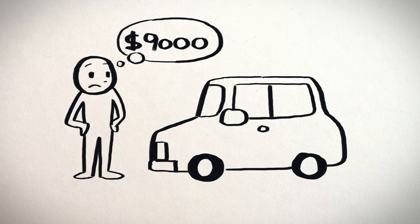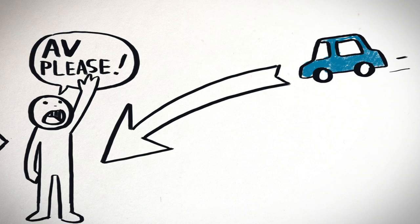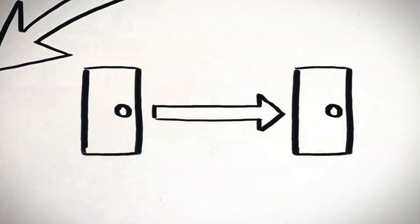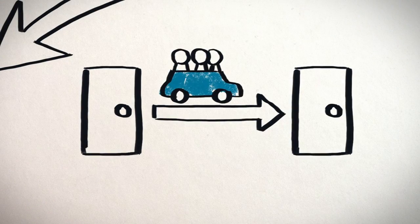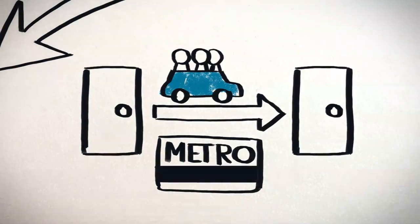Instead of spending $9,000 a year on your own car, when we combine car sharing and ride-hailing and buy a seat in a shared autonomous vehicle, we can get door-to-door transport at the speed of private car travel for the cost of a subway ticket. This transforms people's access to opportunity.